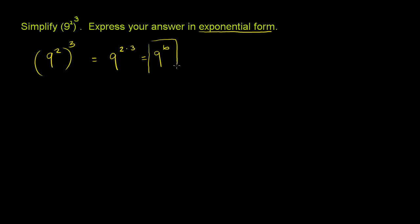We've simplified. Now, what's not exponential form? What's not exponential form is if we were to actually multiply 9 times 9 times 9 times 9 times 9 times 9, which is going to be a very, very large number — we'd probably need a calculator and it would take some time. So 9 to the 6th is the answer.